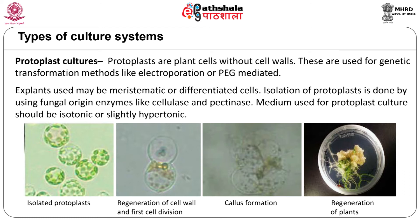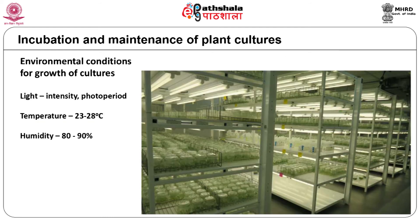The plant cell and tissue cultures need to be maintained at appropriate light and temperature regimes for getting the desired growth and differentiation response. A typical incubation room for plant tissue cultures has controls for adjusting light intensity and duration. Temperature of the room is maintained at around 25°C, which is optimal for growth of plant cells.